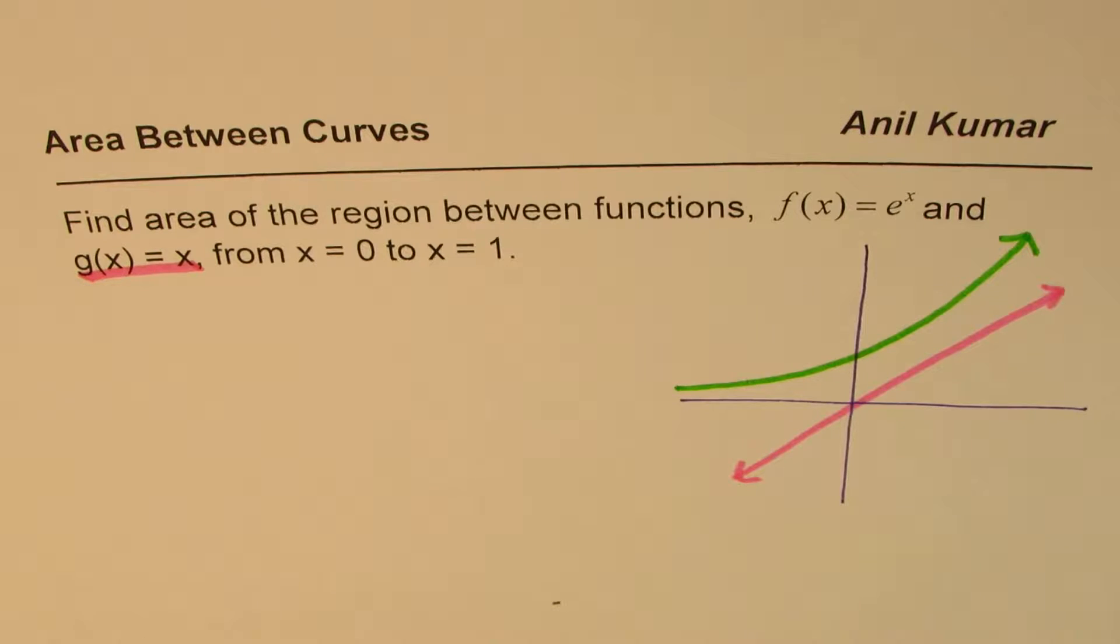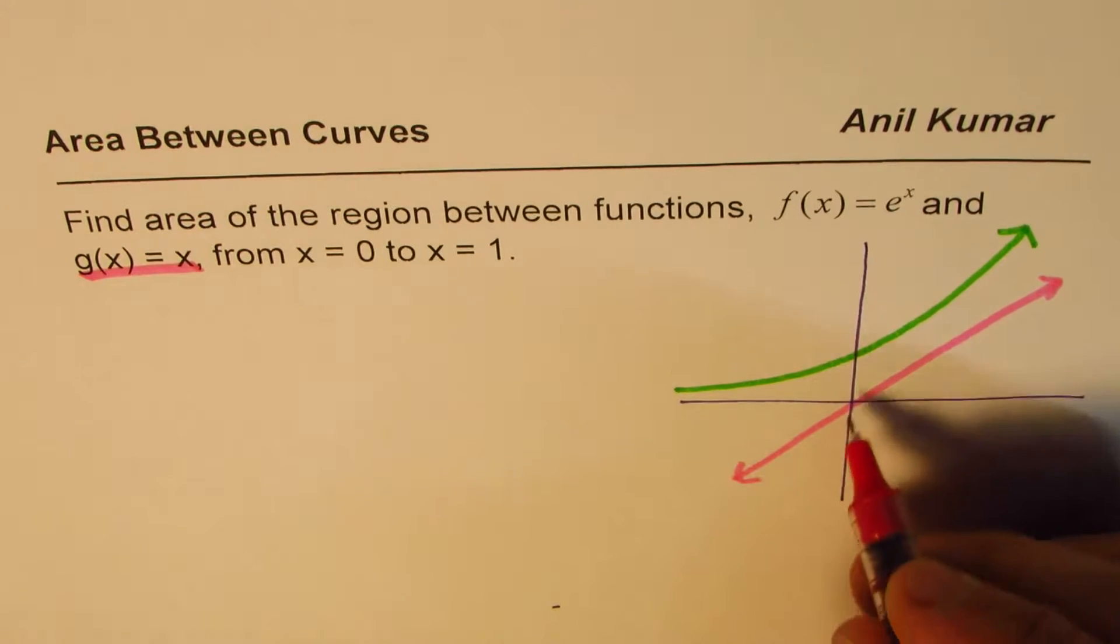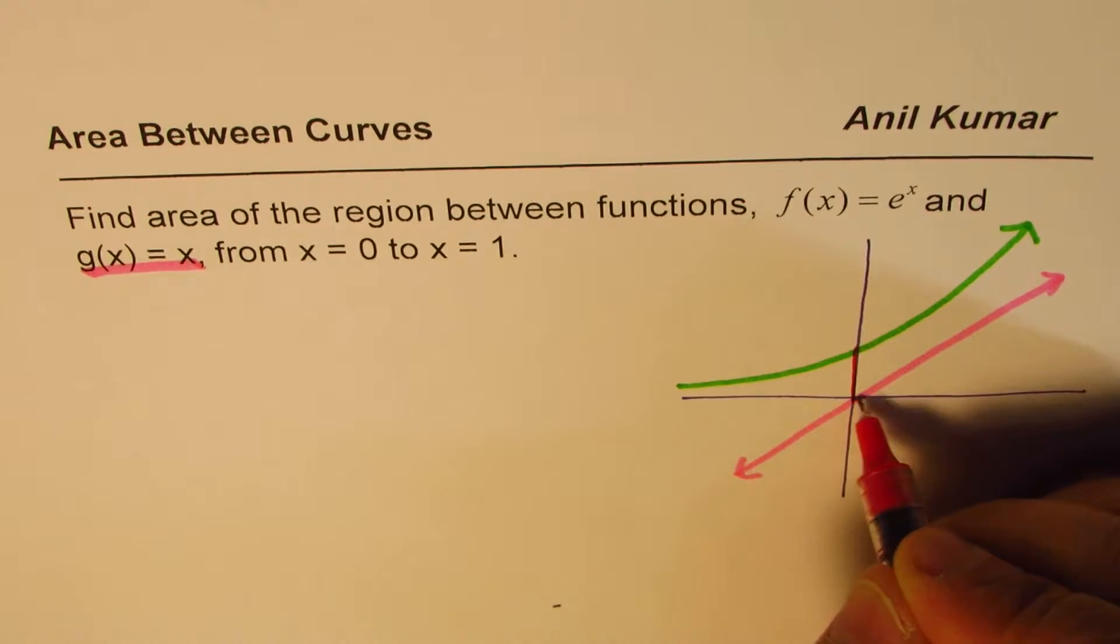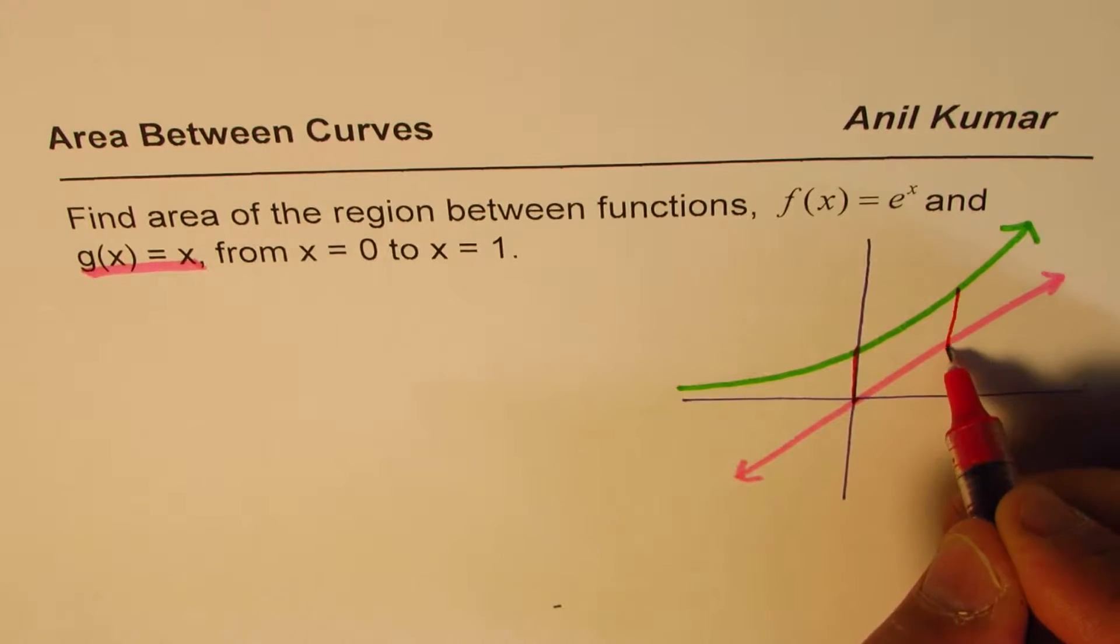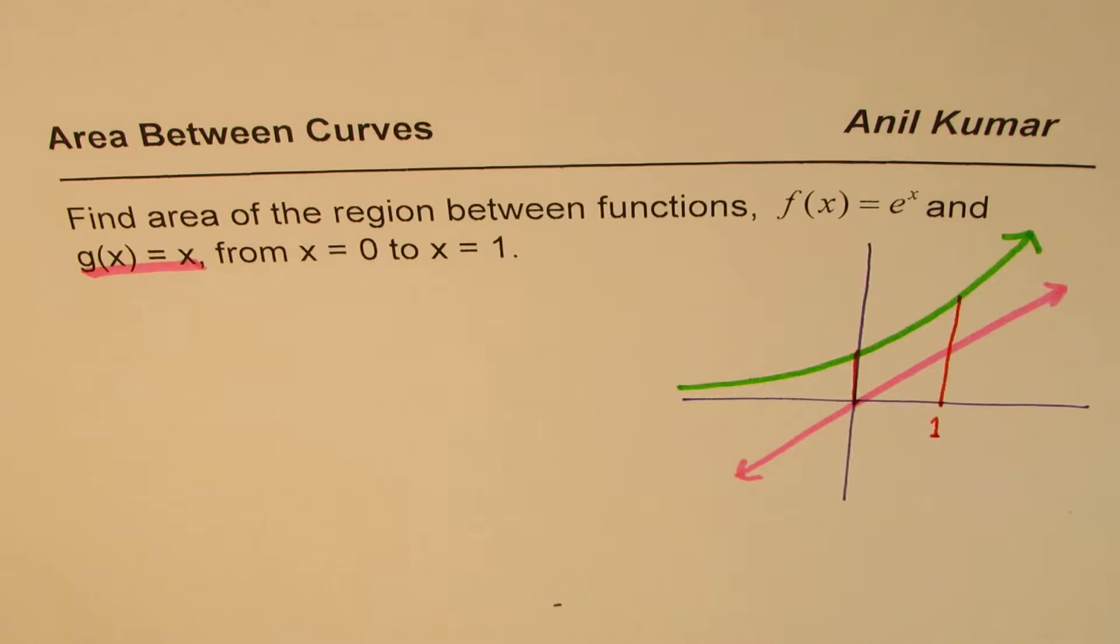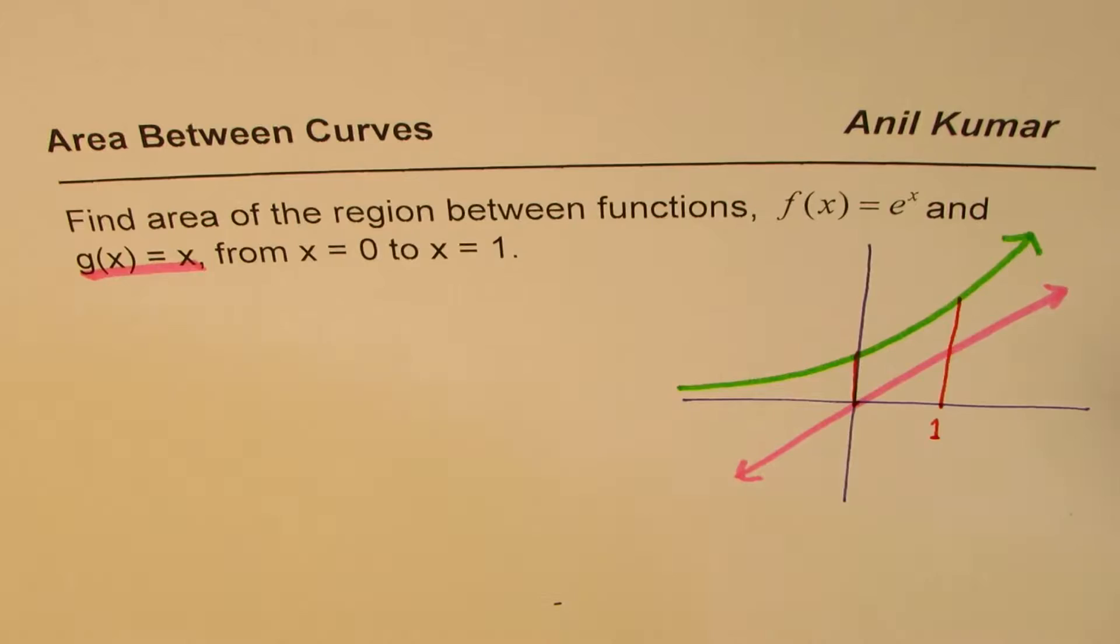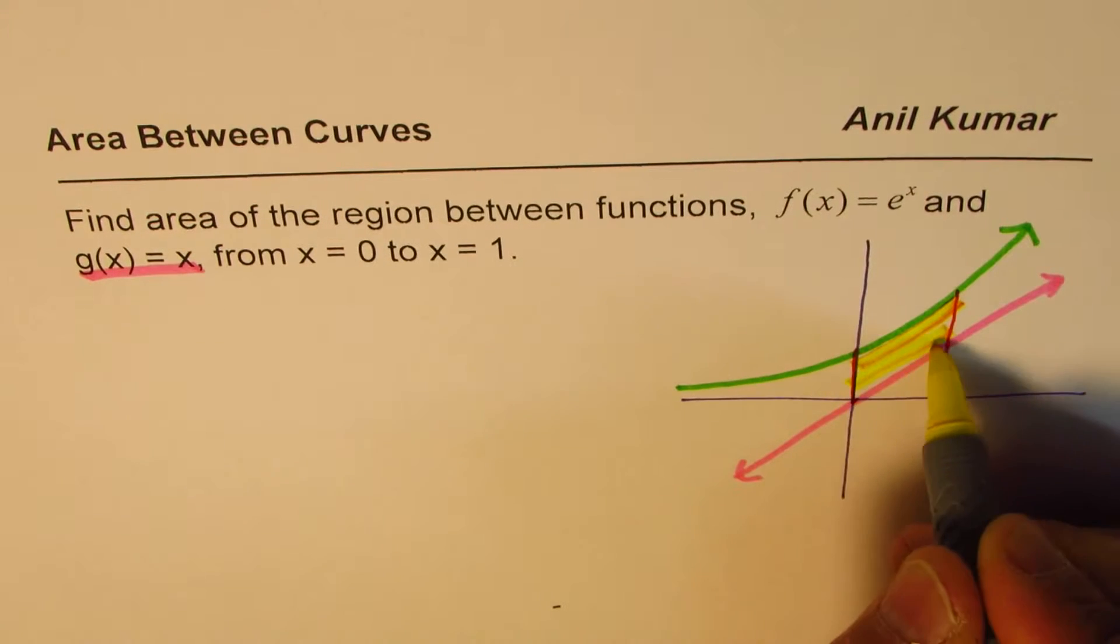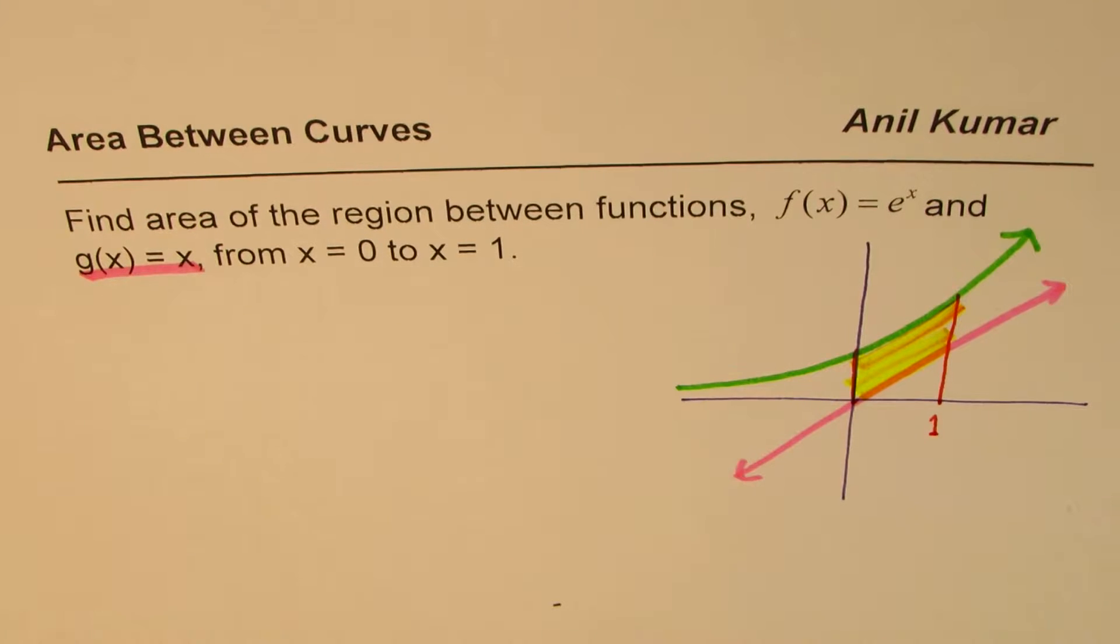And we are interested in finding area which is bounded by x equals 0 on the left side. So this is this portion and x equals 1. Let's say this is x equals 1. So we are interested in this portion, which is between x equals 0 and 1. So let me highlight this. That is the portion we are interested in.